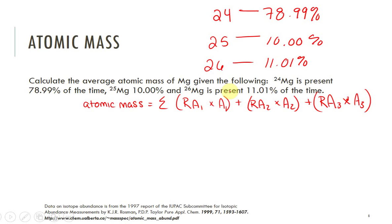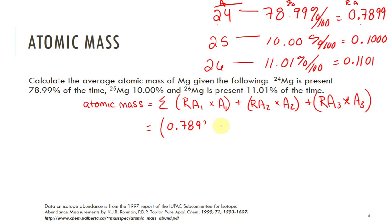Because I have these written out, I can pretty quickly decide what my relative abundances are. This is my A, these are my mass numbers, this is percent. We don't really want percent, we want relative abundance, which is just percent divided by 100. So if we divide this by 100, we get 0.7899. Divide this by 100, you get 0.1000. Divide this by 100, and we get 0.1101. So now I have my relative abundance and my mass number here, and so I can go ahead and just plug them in. The first one is 0.7899 times 24, plus 0.1000 times 25, plus 0.1101 times 26.